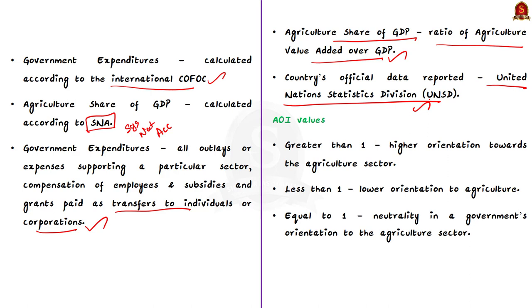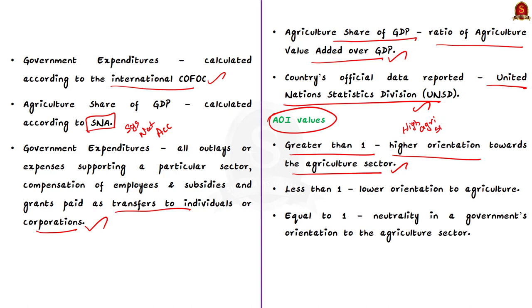If AOI is greater than one, it means a higher orientation towards the agriculture sector — that is, for higher shares of government spending there is a relative contribution of agriculture to the country's economy. If AOI is less than one, it means there is a lower orientation to agriculture. An AOI equal to one reflects neutrality in the government's orientation to the agriculture sector.